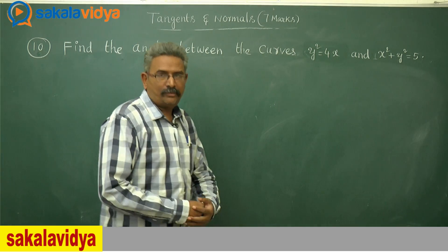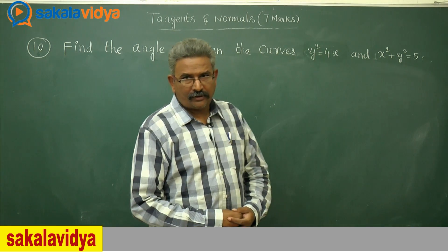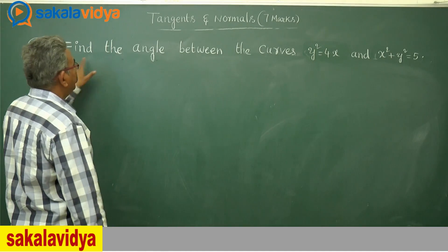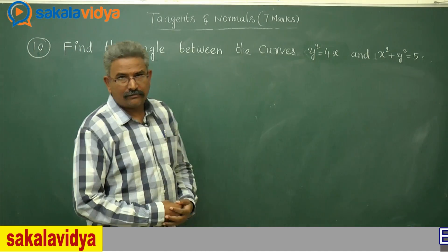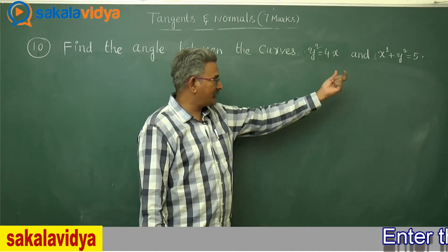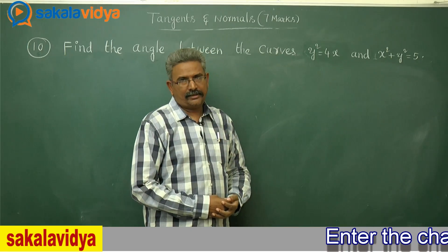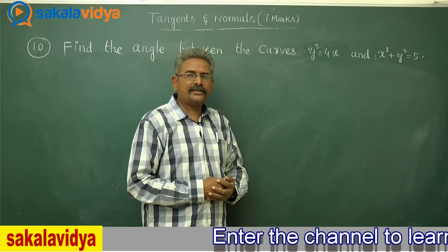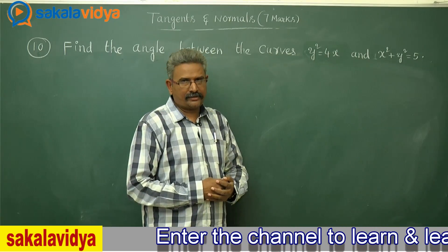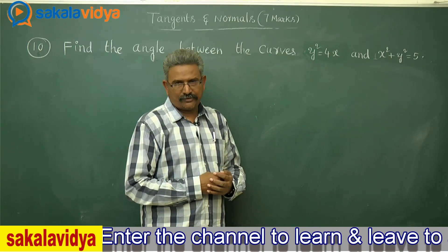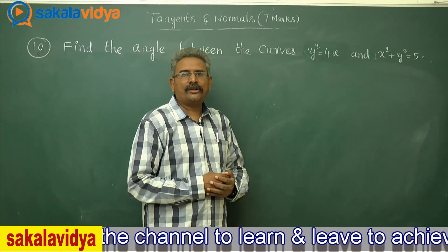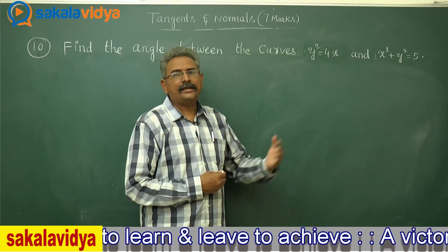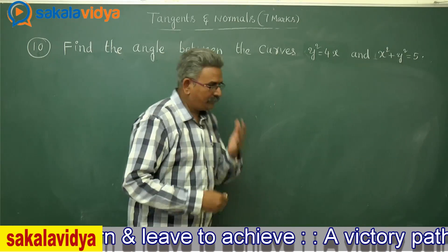Let us solve one more problem. First let me read the question: Find the angle between the curves y² = 4x and x² + y² = 5. First, let us find out the points of intersection. After that, at the respective points of intersection, let us find out m1 and m2. Applying the tan theta formula, we can find out the angle between the curves.